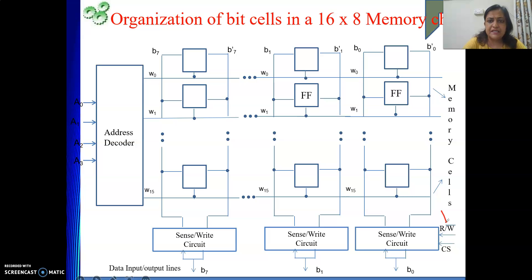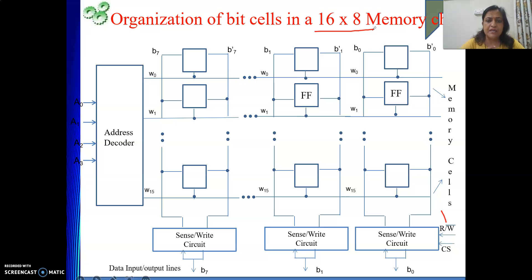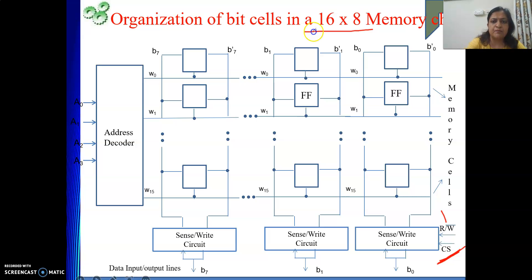In our system, there are many chips that give us the total required size of memory. Whenever multiple chips are present, we need to know from which chip data is going or coming. For that, the CS — chip select — line is there. Because we mostly work in a multi-chip environment, whenever we are working with this chip, the CS line should be active.